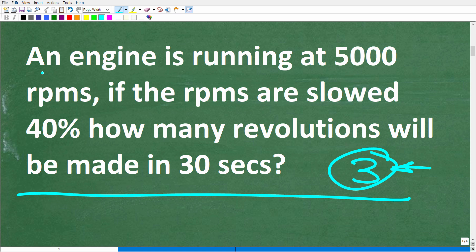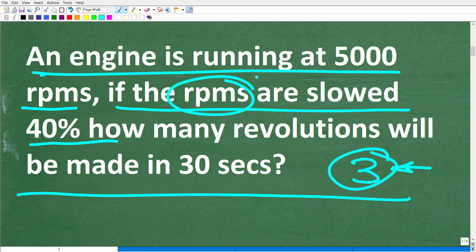All right, so we have this engine. It's running at 5,000 RPMs. Now, if we slow the engine down by 40%, obviously our RPMs are going to decrease. So the question here is, how many revolutions will the engine make in 30 seconds after we slow this down or slow the engine down by 40%?